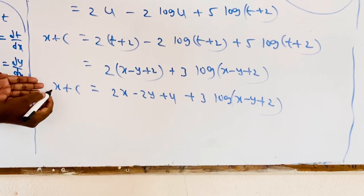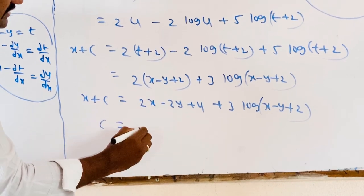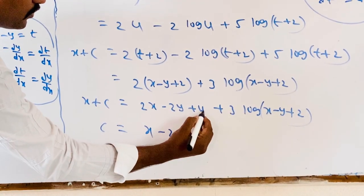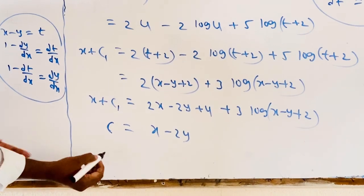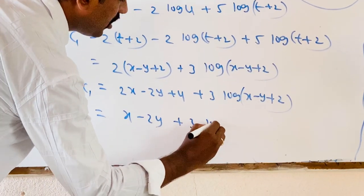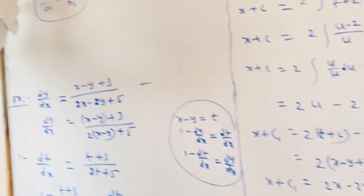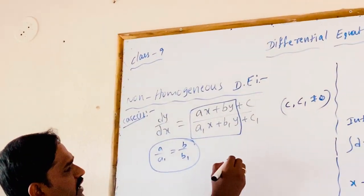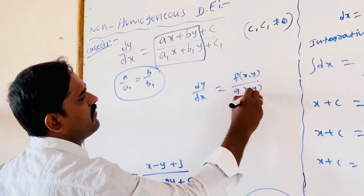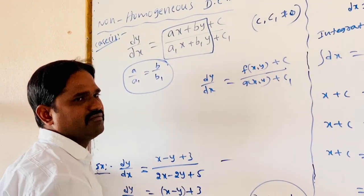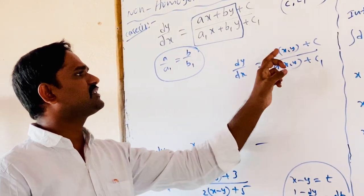On the right-hand side we have an x variable, so transferring it to the RHS: C = 2x − x − 2y + 4 + 3 log(x − y + 2), giving x − 2y + 4 + 3 log(x − y + 2). Absorbing the constant 4 into C, the final solution is: x − 2y + 3 log(x − y + 2) = C. This is the solution of the non-homogeneous differential equation for Case 1. Without the constants c and c1, it would reduce to a homogeneous equation where x and y are of the same degree.